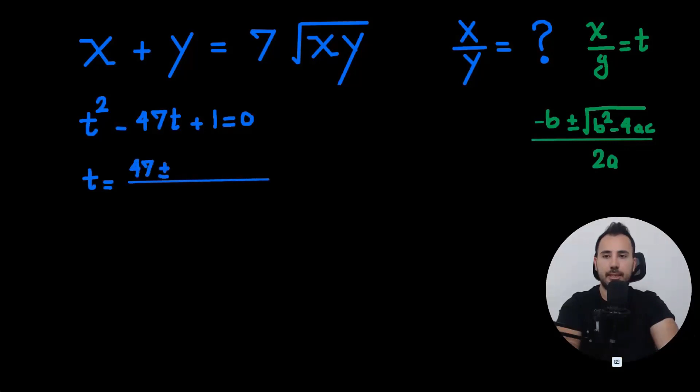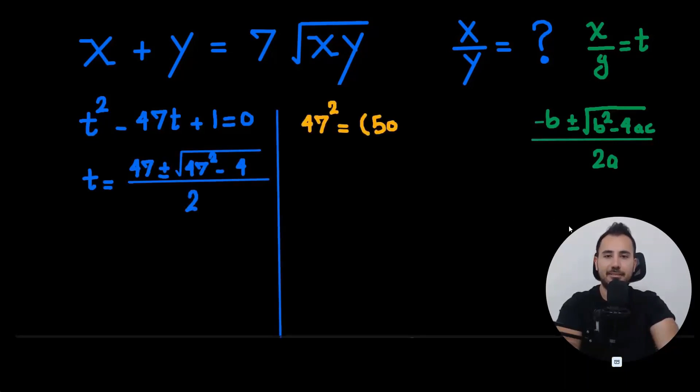Positive 47 plus minus square root of b squared, which is 47 squared minus 4ac, which is only 4. So now, to find 47 squared, let's just use the second binomial formula.